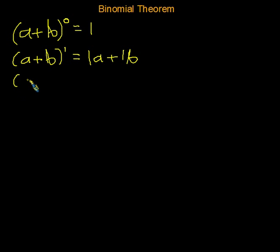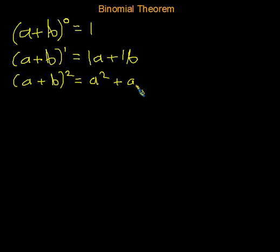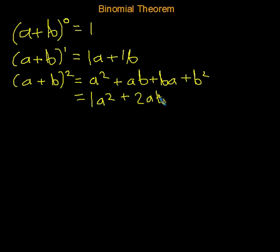Now let's see what happens when we have a plus b raised to the second power, or squared. Hopefully you remembered that you have to FOIL this — it's not a squared plus b squared. When you do a plus b times a plus b, you get a squared plus ab plus ba plus b squared. Cleaning that up: 1a squared plus 2ab plus 1b squared.